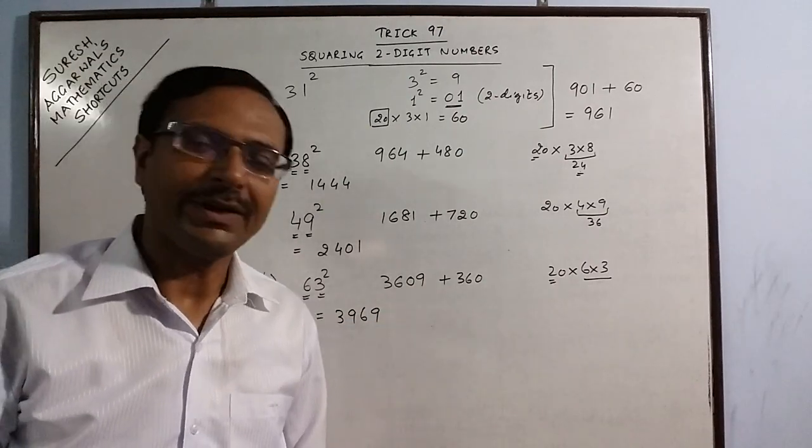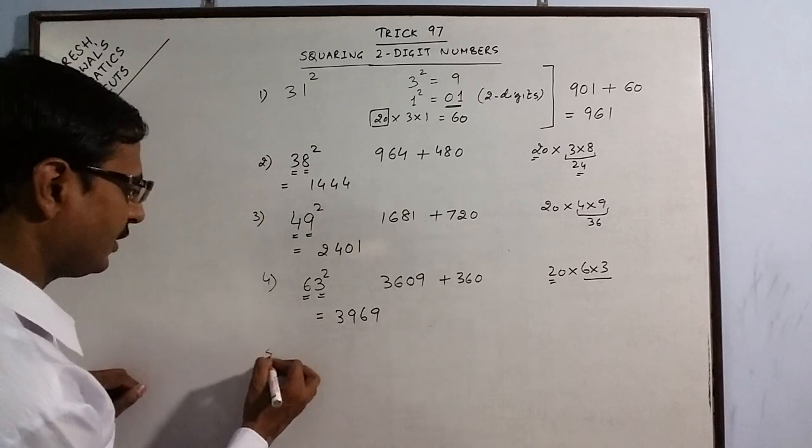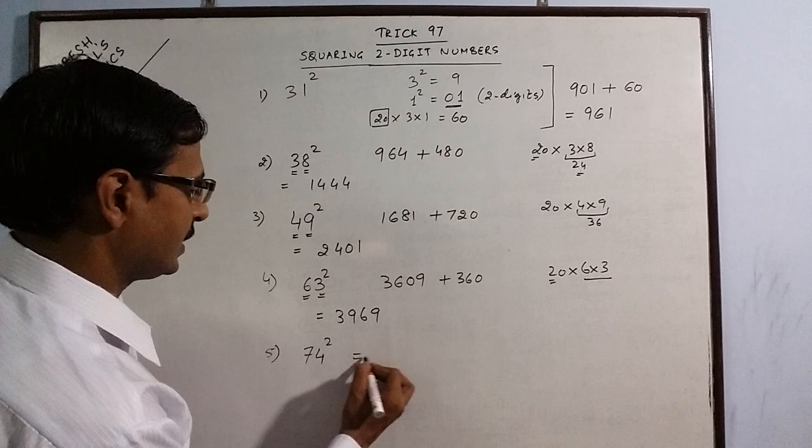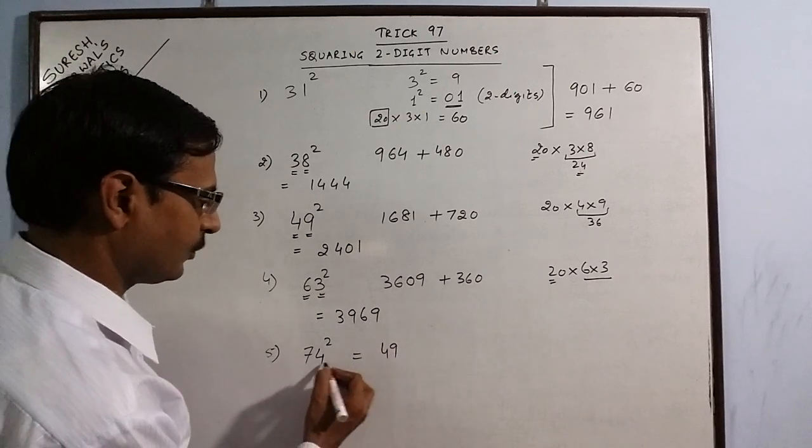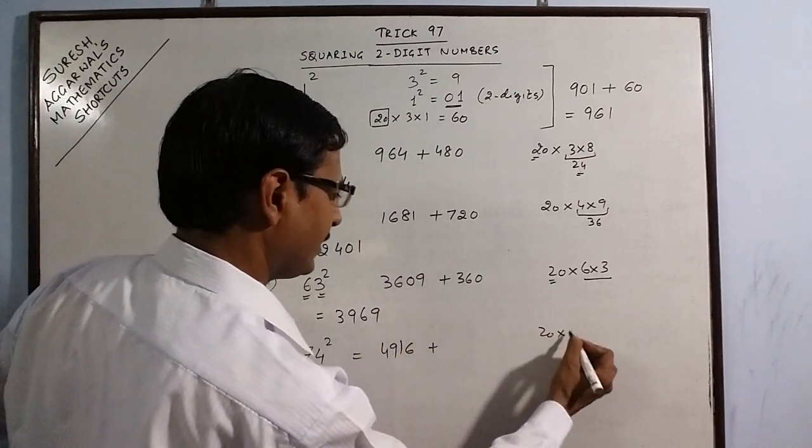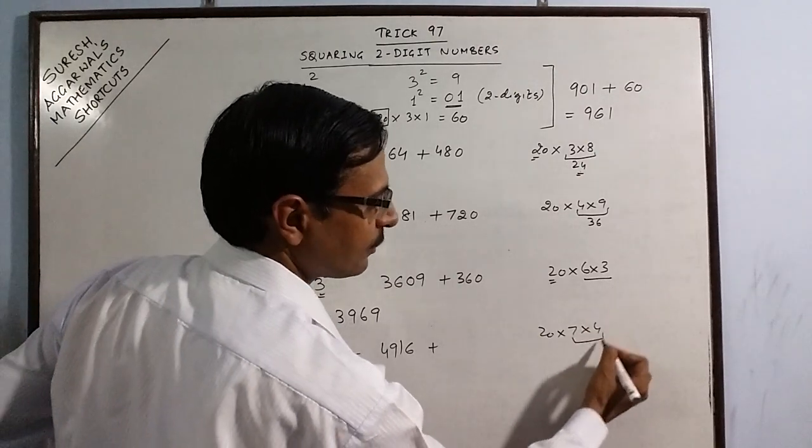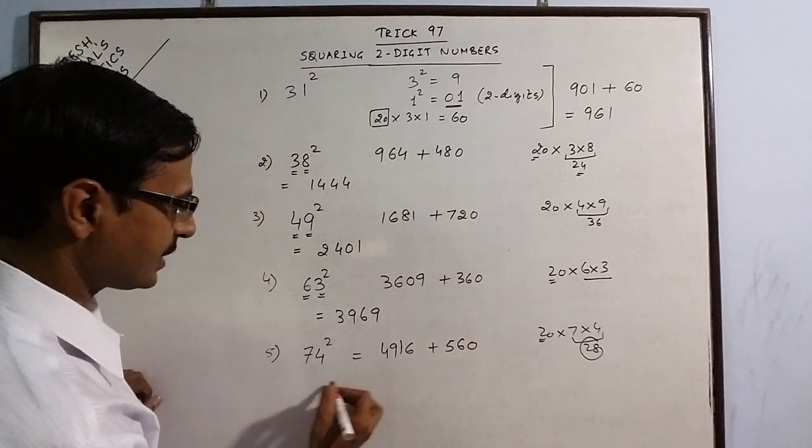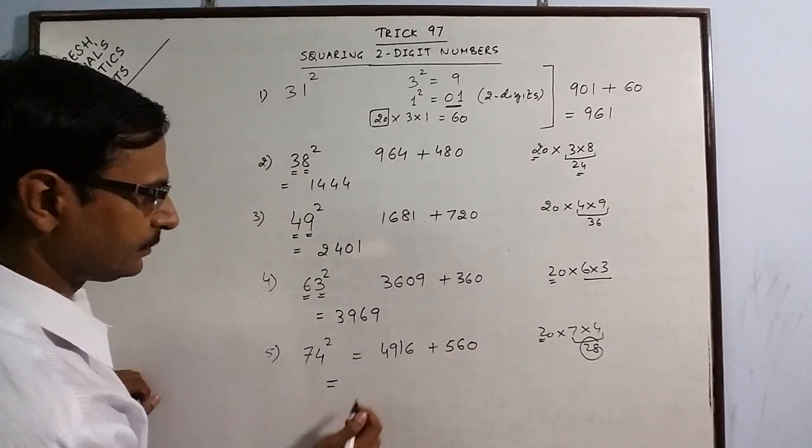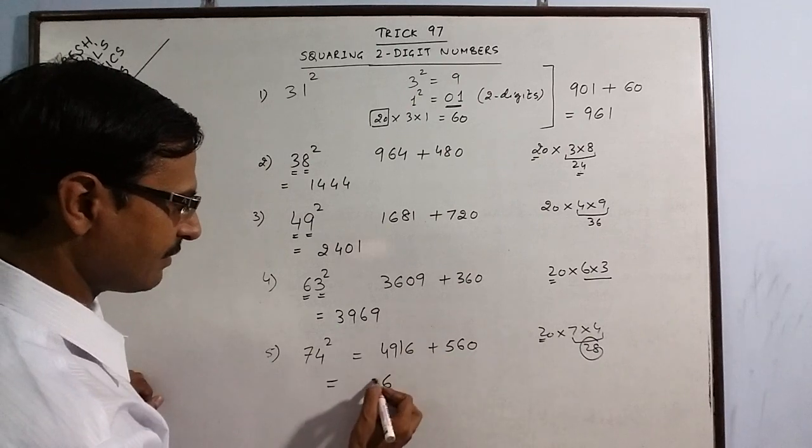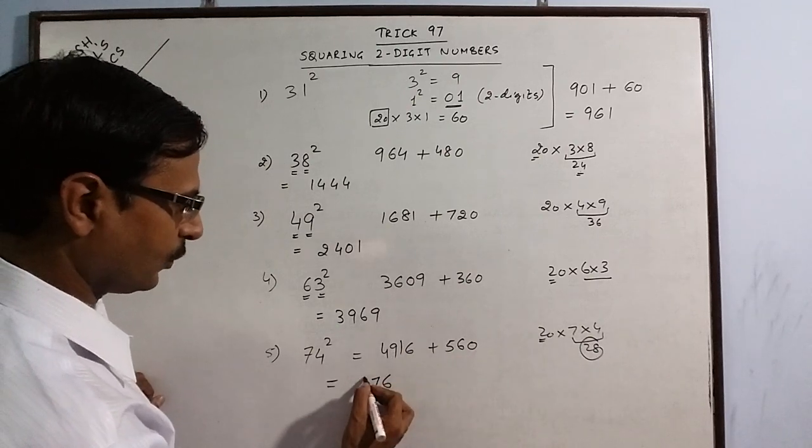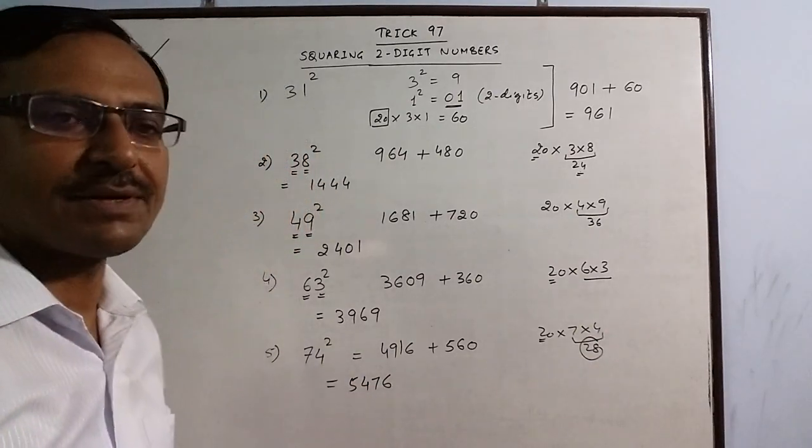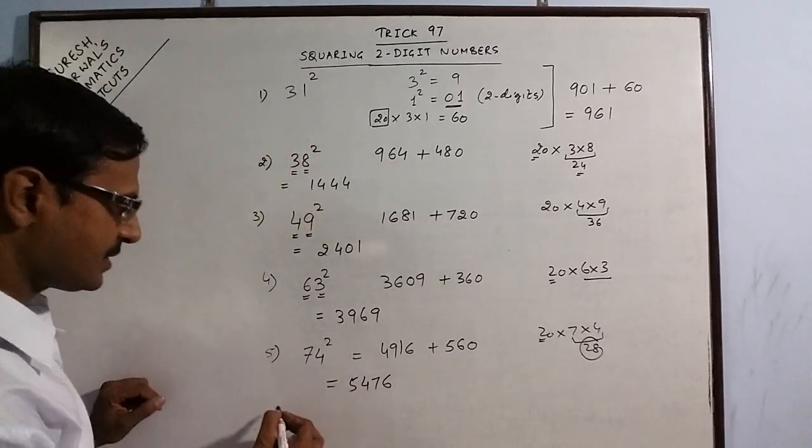Likewise you can go on and find the squares of all numbers. Say we take one or two more examples. Say 74: 7 square is 49, 4 square is 16, 20 times 7 into 4 - 7 into 4 is 28, double of 28 is 56. So your answer is 5476, which is the square of 74.